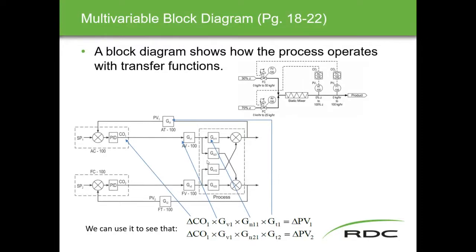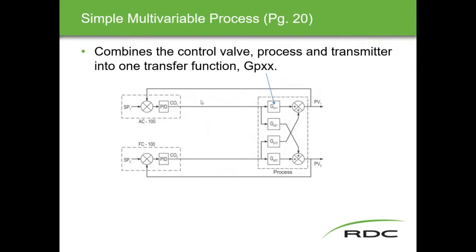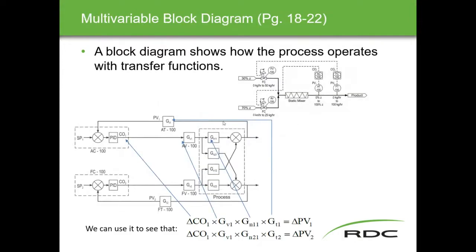The signal also comes out of controller one, goes through GV1, splits off, and goes to GN21 — the decoupling value that gets summed with the signal from controller two in order to get rid of the interaction. This multiplier adjusts the signal, multiplies it by this value, and puts it into the summing block so that when it gets added together it doesn't change its process variable. The signal goes through GN21 into the summing block, through the transmitter, gives us the new process variable, and then back to the controller.